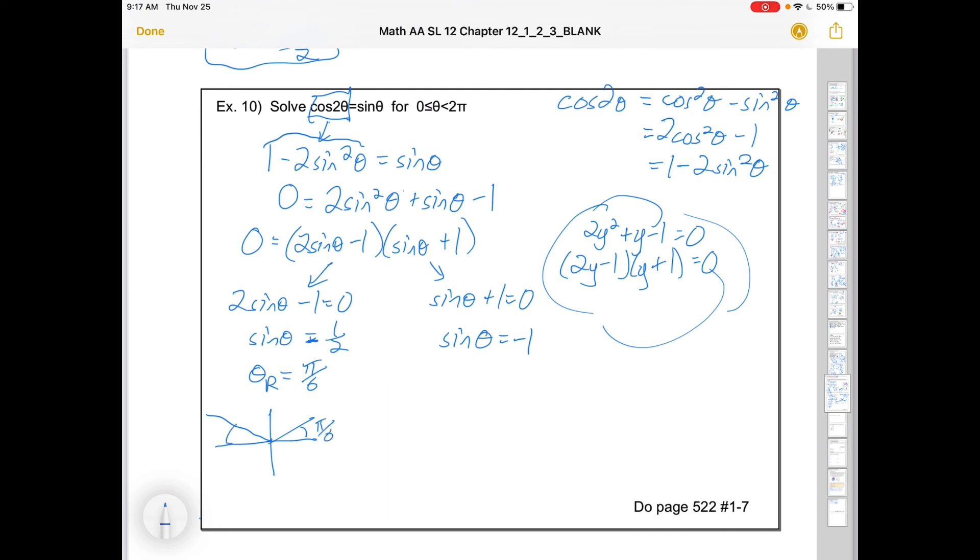There we go. π/6. π/6. And so we have answers here of π/6. θ is π/6. We have an answer of π - π/6. So that would be 5π/6. And we also have an answer that comes from the other equation.